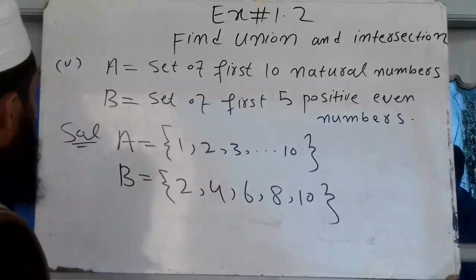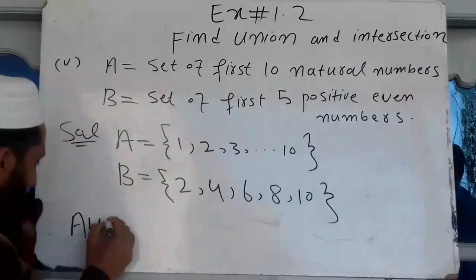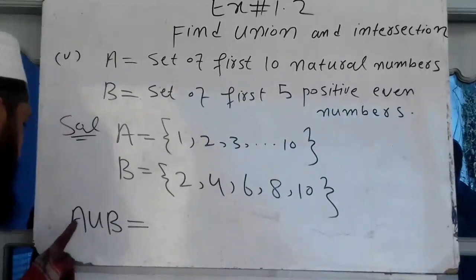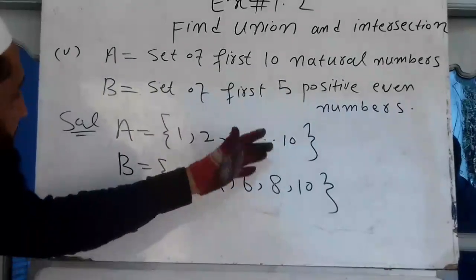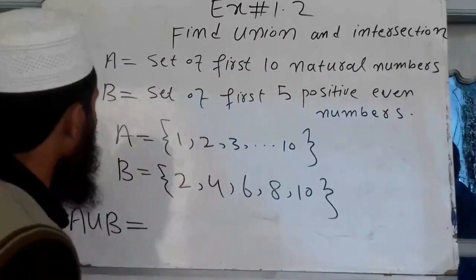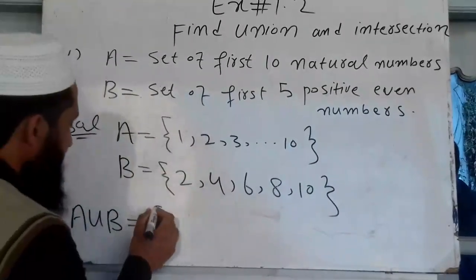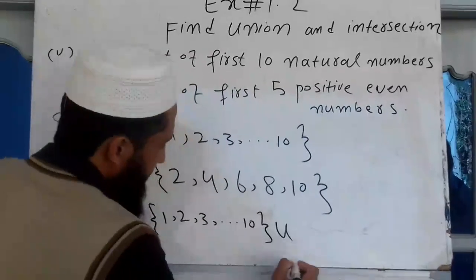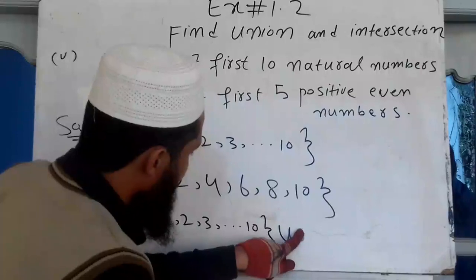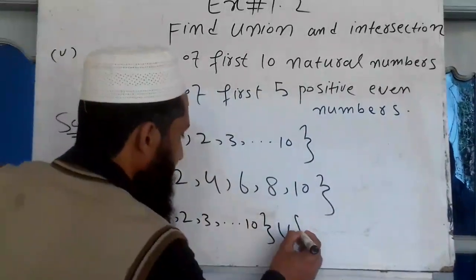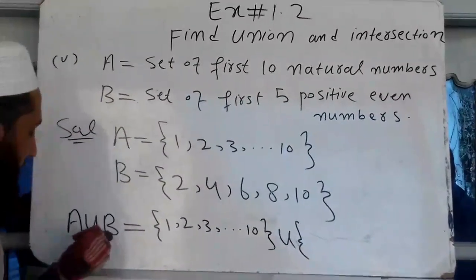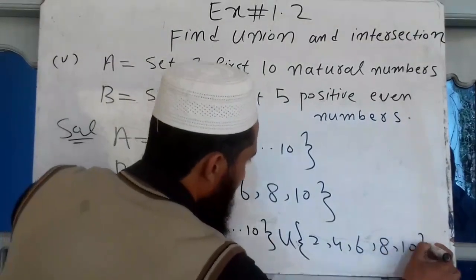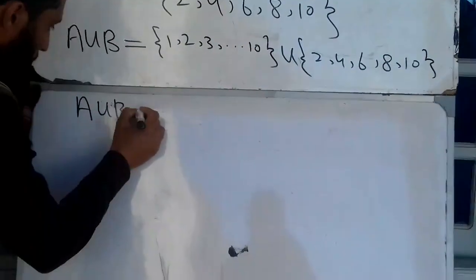This is the first five positive even numbers. So we have to say the union is equal to A union B. We always write set A, then set B. If you want A union B, then A is the set {1, 2, 3, ... up to 10}. Then B is the set {2, 4, 6, 8, 10}.